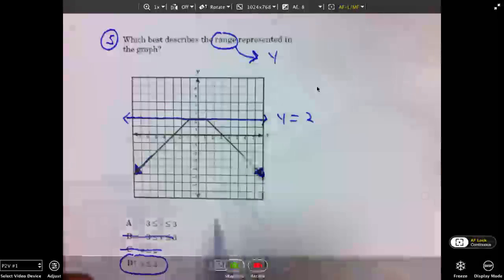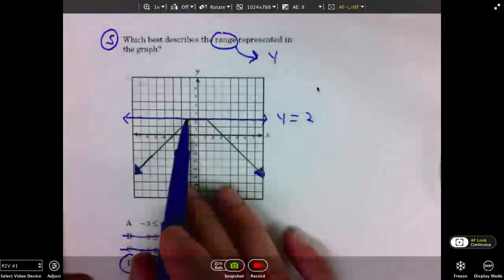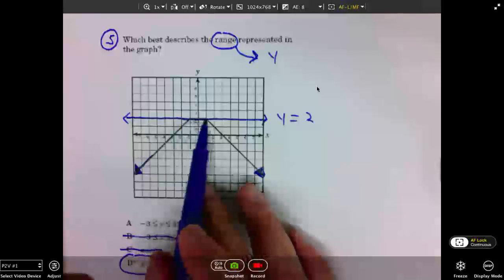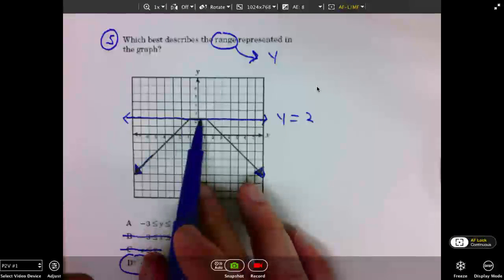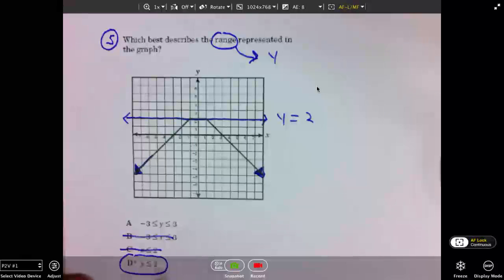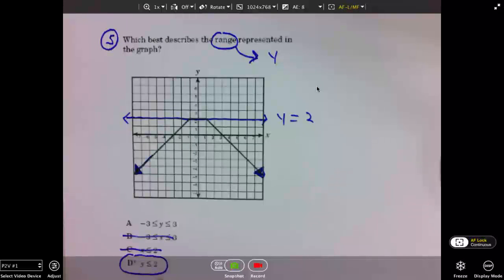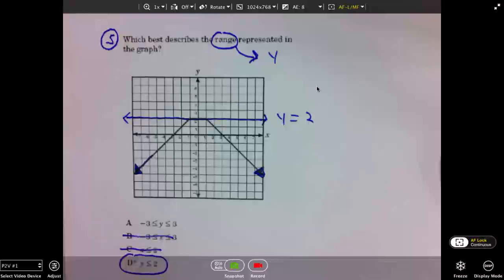It can be equal to 2 because of this line here. It's bold. It's colored in, essentially. 2 is a possible Y value. 5 is D. That concludes this video. Thank you.